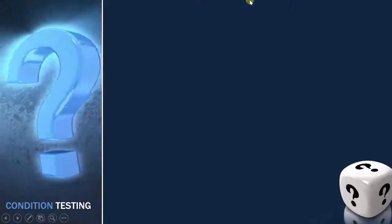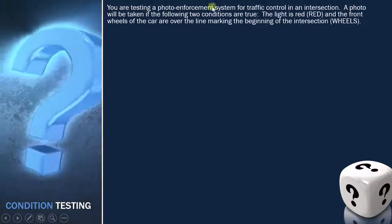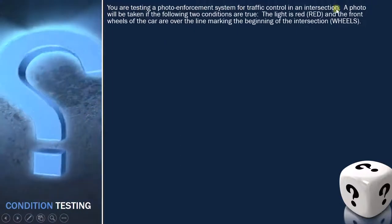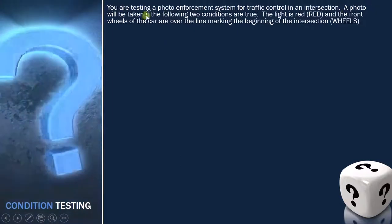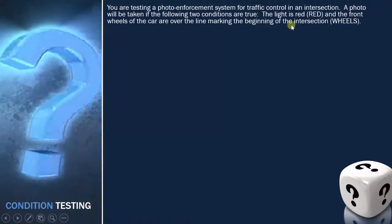This is the same example which we will discuss again. You are testing a photo enforcement system for traffic control in an intersection. A photo will be taken if the following two conditions are true: the light is red and the car is over the marking.